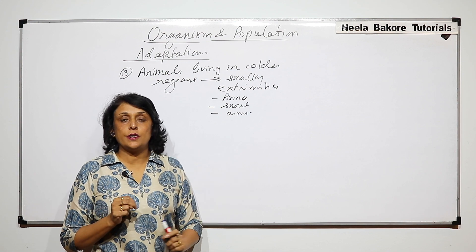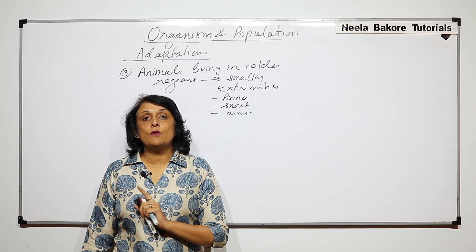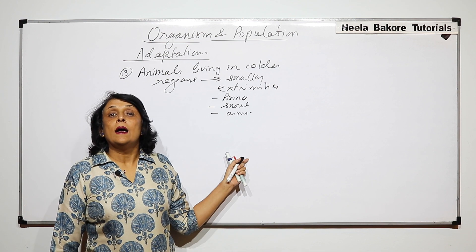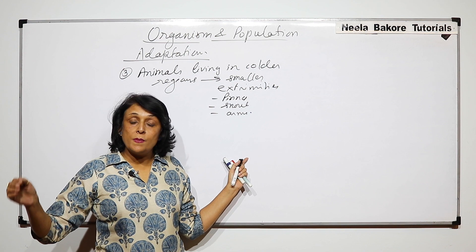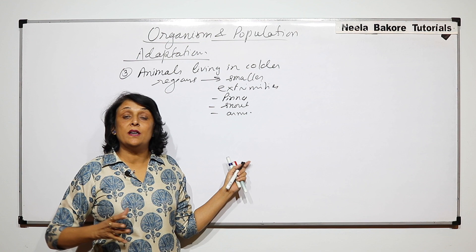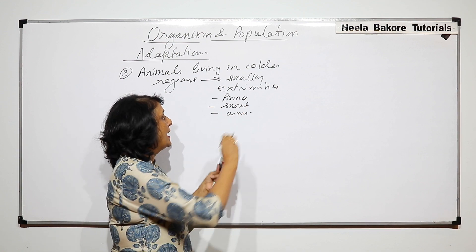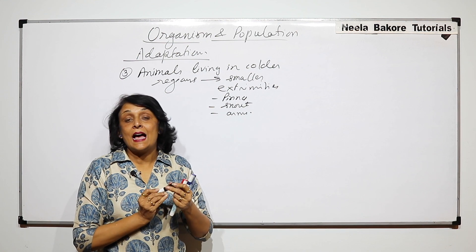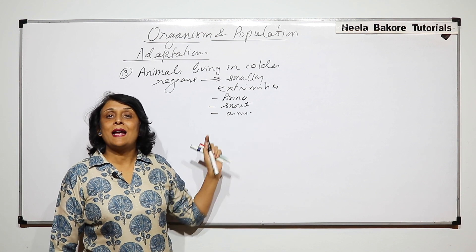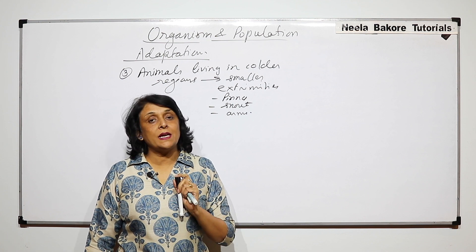If we compare foxes which are found in colder regions and the foxes which are found in the desert region, we will find that the foxes in the warmer desert condition have much bigger pinnas, their snout is much bigger, and their legs are also bigger.